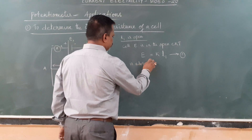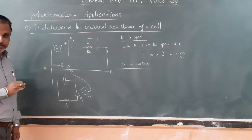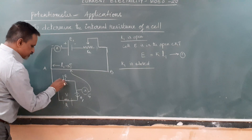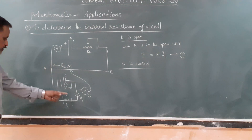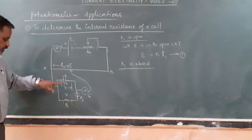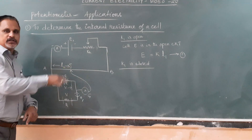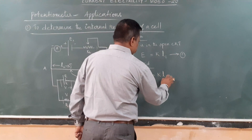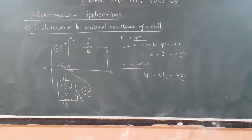Now K1 is closed. When we close this key, the secondary circuit is complete and there will be some drop across the internal resistance. Whatever is the potential difference across the external resistance R, that same potential difference is balanced by length L2 of the potentiometer. The terminal voltage V across the cell equals the potential difference across R, balanced against L2. So here I should take V, not E. V is the potential difference across the terminals of the cell when it is driving current.